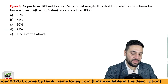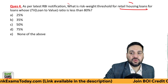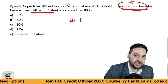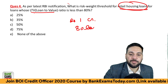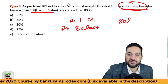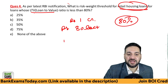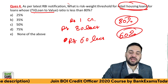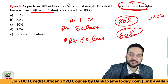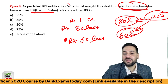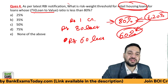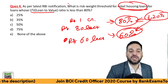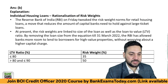Question four covers risk weight thresholds for retail housing loans based on the Loan to Value (LTV) ratio. If a house is worth 1 crore and the bank gives a loan of 80 lakhs, the LTV ratio is 80 percent. If the loan is only 60 lakhs, the LTV is 60 percent. If property value drops by 20 percent, there is a higher probability of default when LTV is high, but lower probability when the borrower has already paid 40 percent — that is why risk weights differ based on LTV.